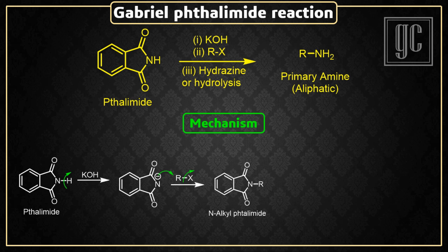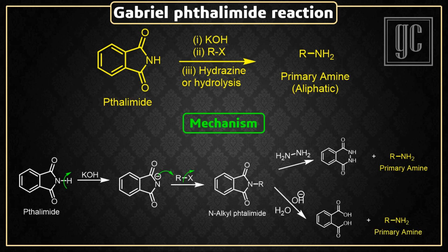Now, N-alkyl-thalamide is treated with hydrazine, or hydrolysis under basic conditions, and the final product — primary amines — are formed.